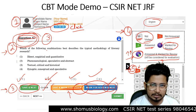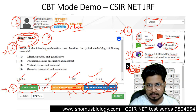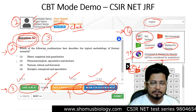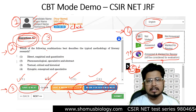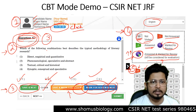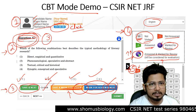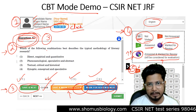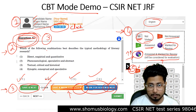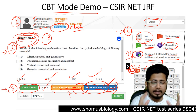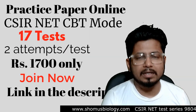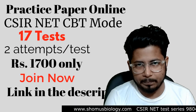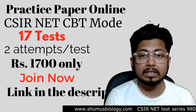These are all the different sections of the CBT mode for the CSIR UGC NET examination. Whether it is CSIR NET Life Science, Chemical Science, Earth Science, or Mathematical Science — all these examinations use the CBT mode, and this is the page format you will encounter.